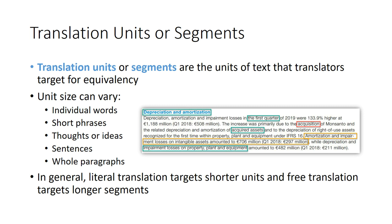Closely related to translation approach is the concept of translation units or segments. A translation unit is the part of a text the translator focuses on when performing a translation procedure. The unit size can vary: it can be an individual word, a short phrase like 'acquired assets' or 'the first quarter,' a thought or idea in a sentence, or even an entire paragraph for a very free approach. In general, a literal approach targets shorter units, while a free translation targets longer segments.